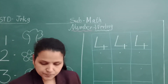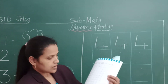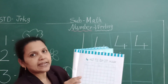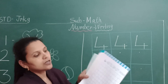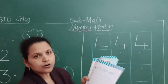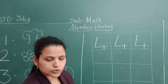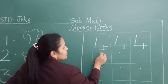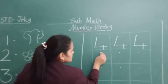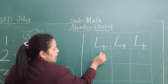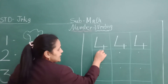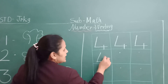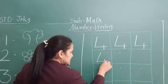Page number — aapke book ke page number sixty-one. Isse dot pe abhi four likhna hai. Tracing pe lik liya hamne four. Ab dot pe number four likhna hai. So, I am going to show you how to write number four on one dot. Let's start.